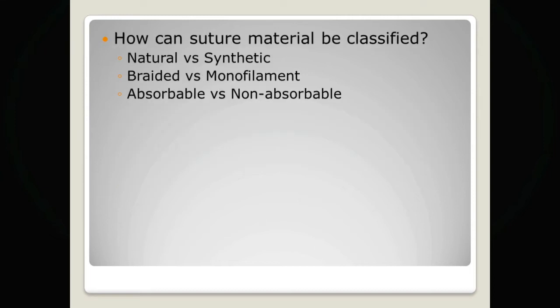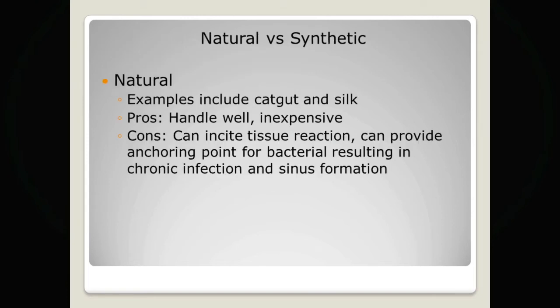Suture material can be classified in a number of ways. The most common way is to classify it as seen on the slide. Suture is either natural or synthetic, it can be braided or monofilament, or the material used is either absorbable or non-absorbable. We will now go through each of these different classifications.